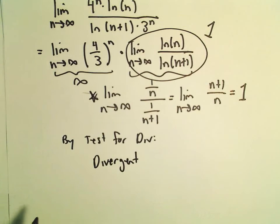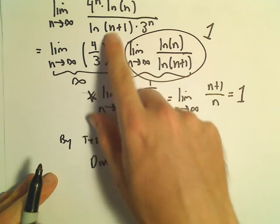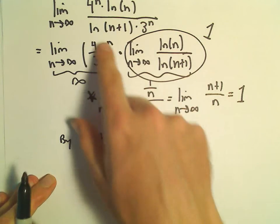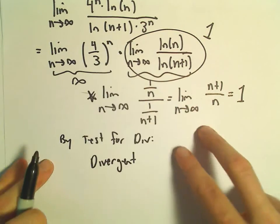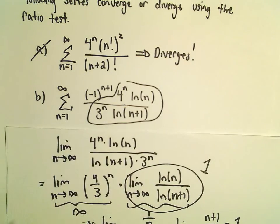And again, recall the test for divergence says, if the limit of the formula associated with the original series, if that's not equal to 0, then the series automatically diverges.